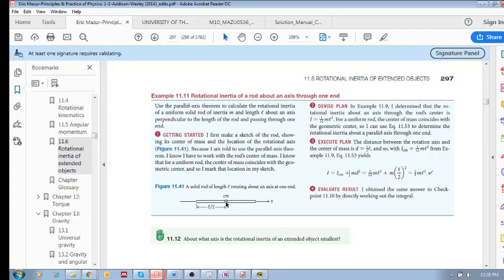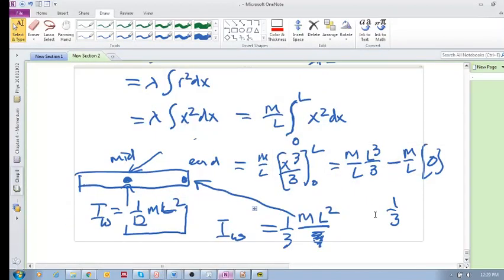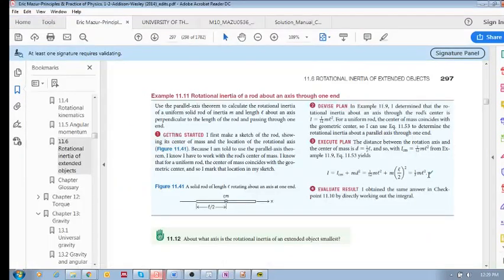D will be the distance from the axis passing through the center of mass to this axis over here, which is L/2. And you see you get exactly the same answer as what I got, ML² over 3.